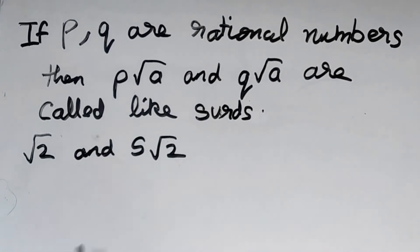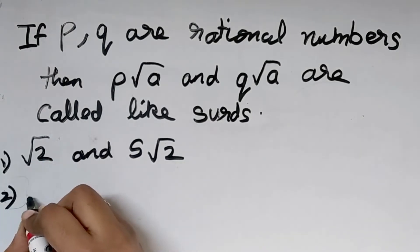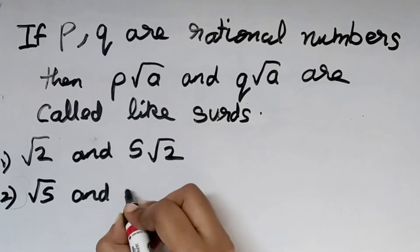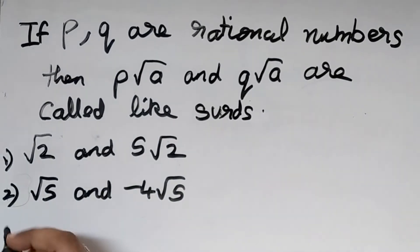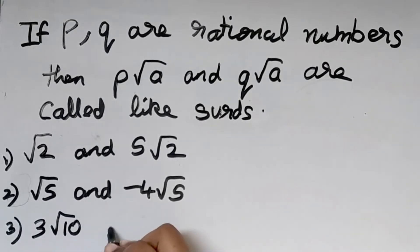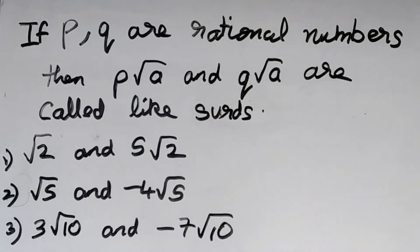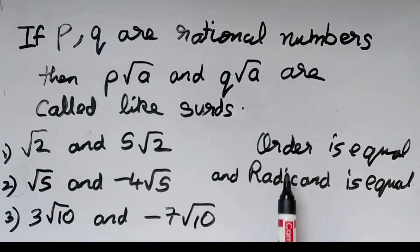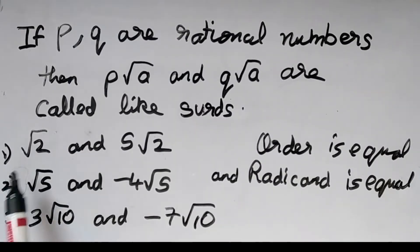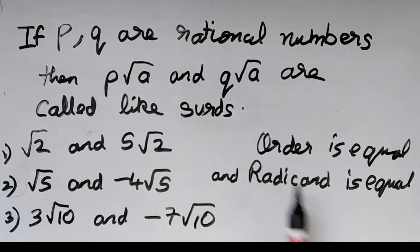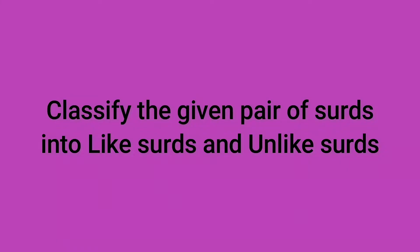Root 2 and 5 root 2 are like surds — this is the first example. Root 5 and minus 4 root 5 are like surds — second example. And 3 root 10 and minus 7 root 10 are like surds — third example. In like surds, the order is equal and the radicand is also equal. Here the radicand is 2, here it is 5, and here it is 10. So in like surds, the order and radicand should both be equal.